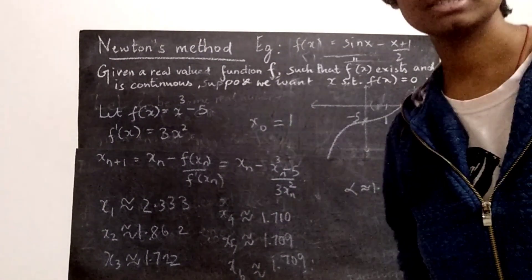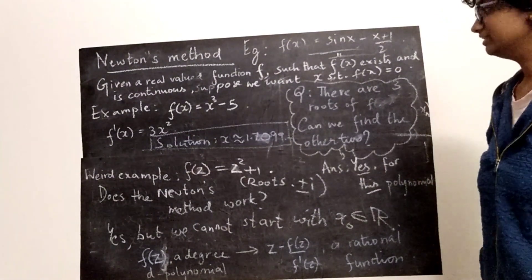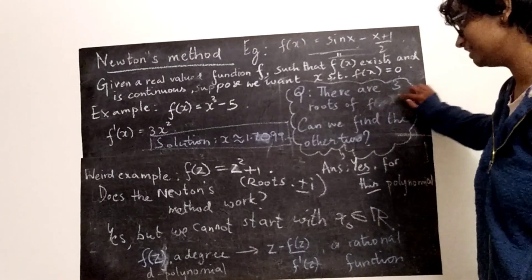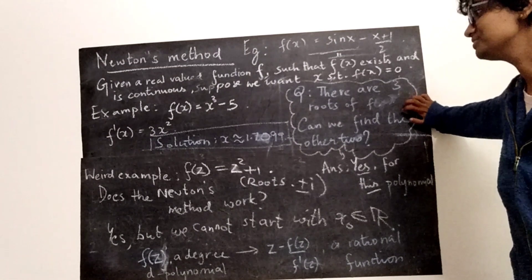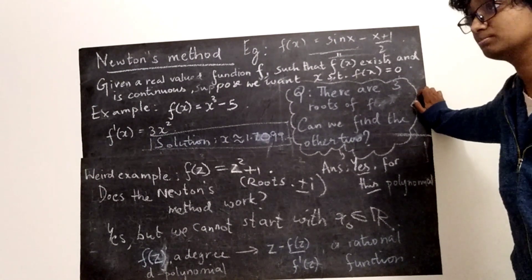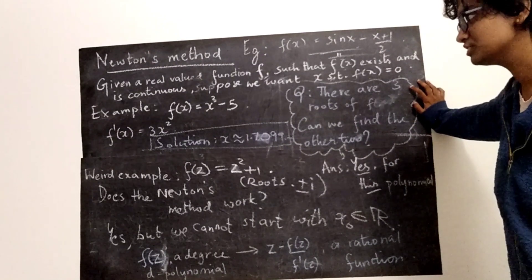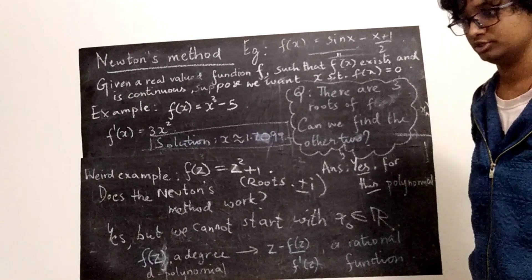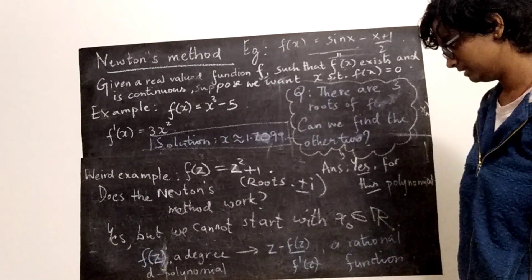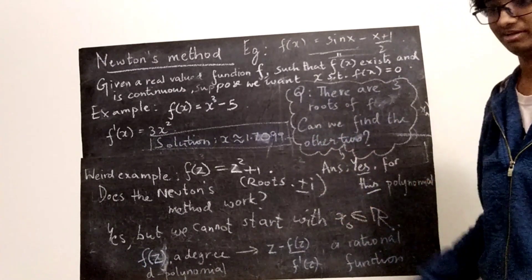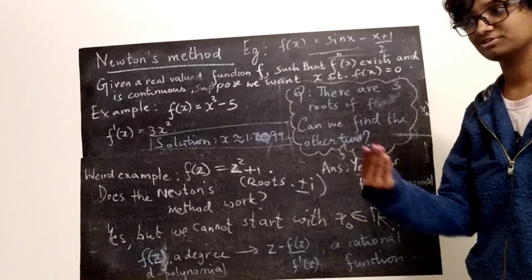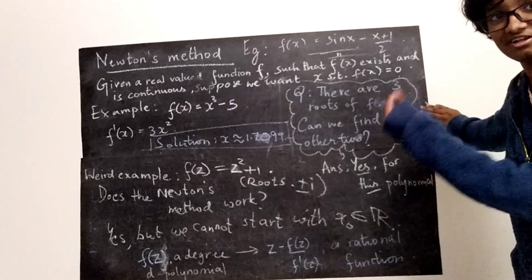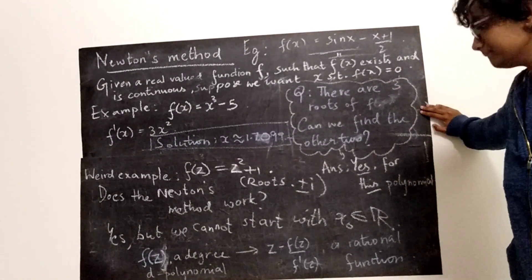We can also look at x³ − 5 as a polynomial with complex inputs — in which case it has three roots. Can we find all three using Newton's method? The other two roots of x³ − 5 must be complex, since 5 has only one real cube root. But if we start with a real number and keep applying xn+1 = xn − f(xn)/f′(xn), we always get real numbers, so we can never approximate a complex root.